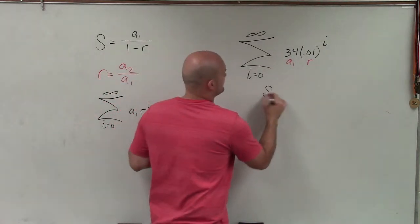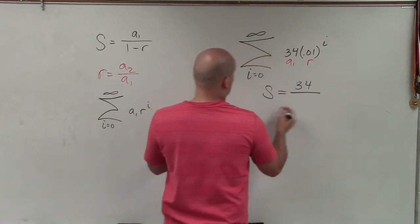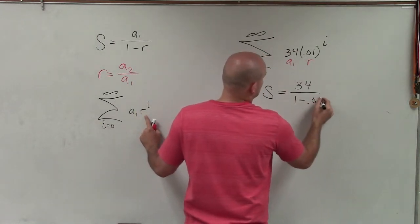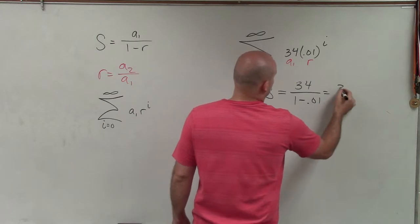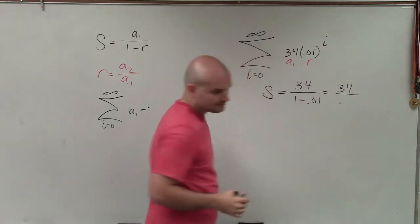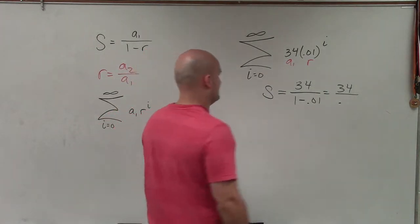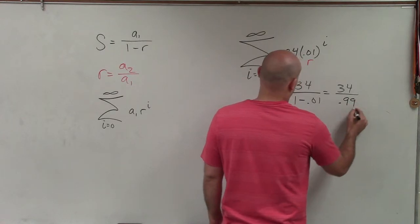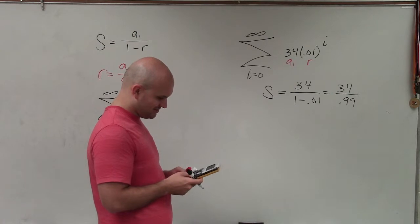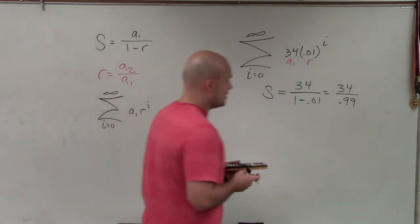So now I'll plug in 34 divided by 1 minus r, which is 0.01. Therefore, I take 34 divided by 0.01 is going to be 0.99. Sorry, I didn't look this one up. Divide it by 0.99.